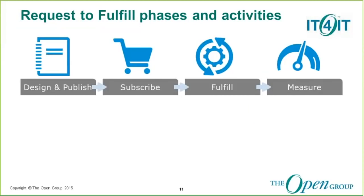The key phases of request to fulfill are shown in this diagram. First, we have define and publish, which focuses on the creation of a catalog and defining service terms, laying the groundwork for the consumption of IT services. Then we have subscribe, which enables users to request services and manages their associated subscriptions throughout their lifecycle. Then we have fulfillment, delivering the request — this may include orchestration across multiple fulfillment routes, fulfillment engines, and providers. And finally, we have measure, which provides information to the consumer or the owner of the service, helping them manage their subscription and control their spending.